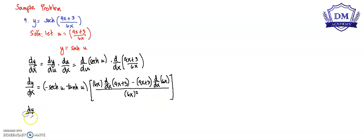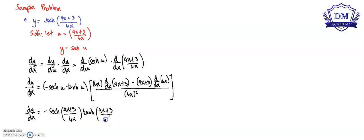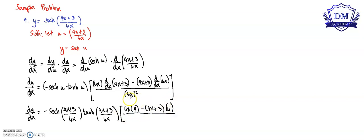Let's simplify this. Substituting back u = (4x + 3)/6x, we have 6x multiplied by the derivative of (4x + 3), which is 4, minus (4x + 3) multiplied by the derivative of 6x, which is 6. All over the square of 6x, that is 36x squared.